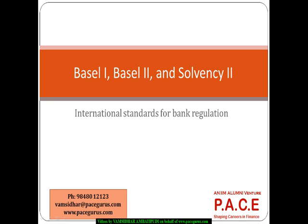In this session, let's have a good understanding of Basel, especially the Basel Accord called Basel 1, Basel 2, and the Solvency 2 regulation for insurance companies. Basel 1 and Basel 2 are primarily targeted towards the banking sector, whereas Solvency 2 is targeted towards the insurance sector. These are the international standards with respect to the regulation of banks and insurance companies.